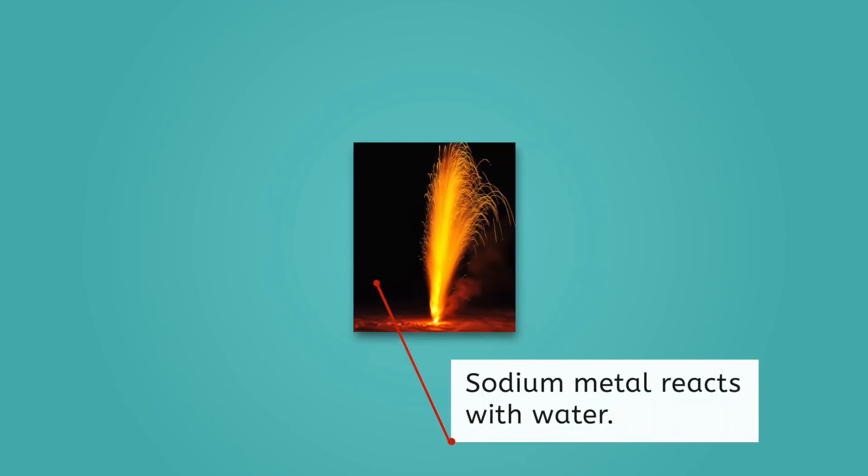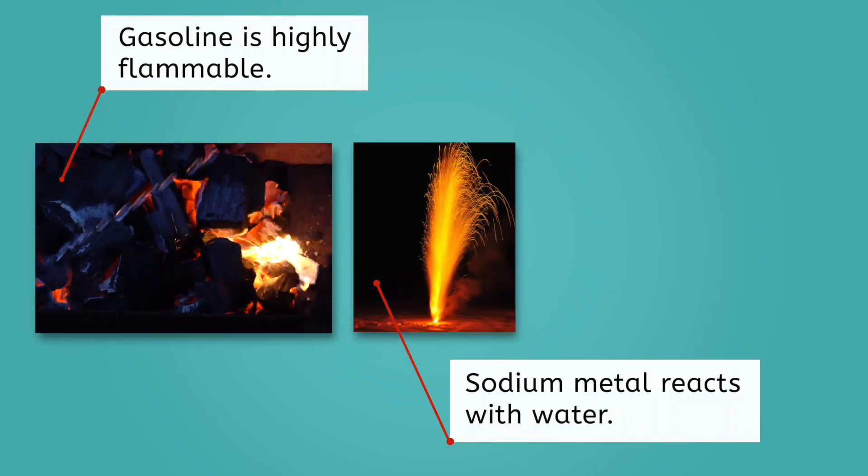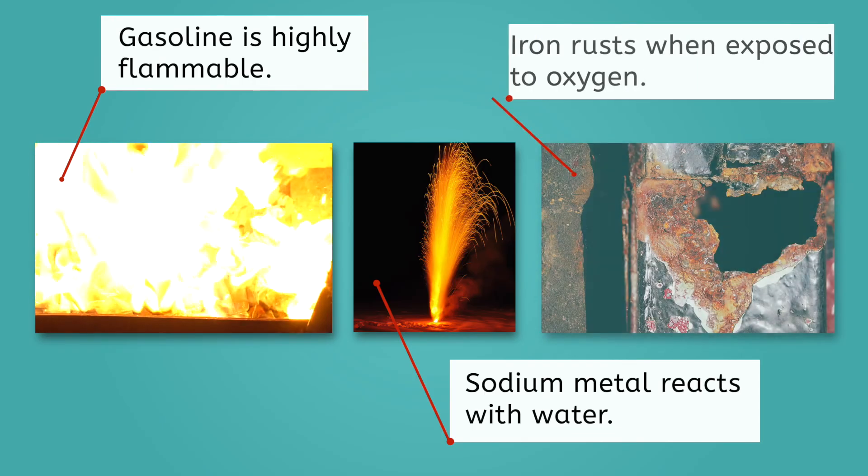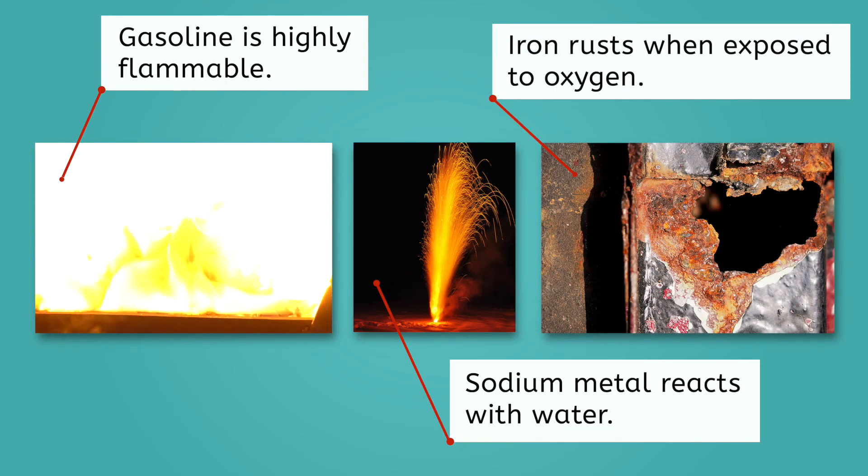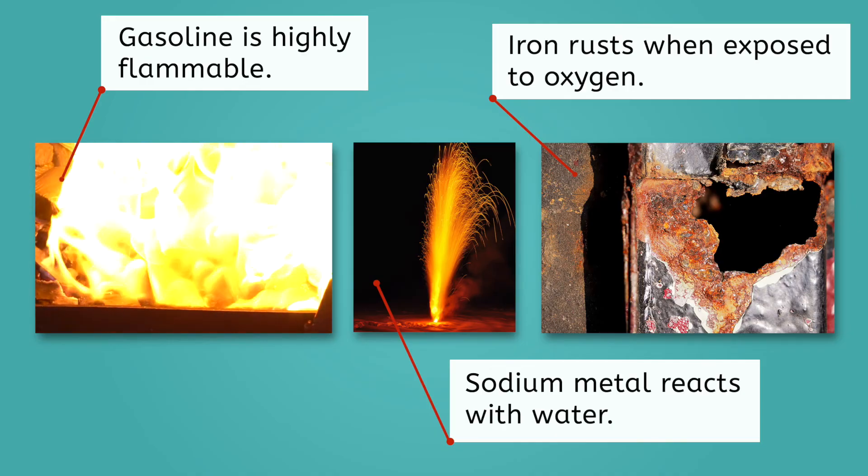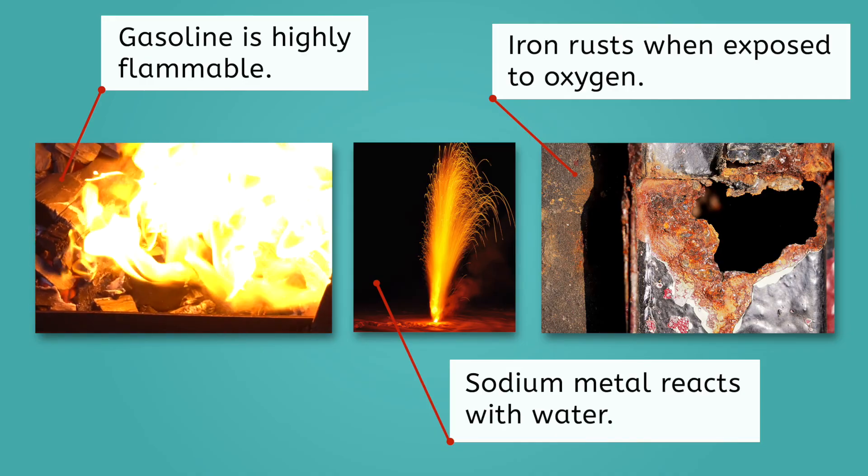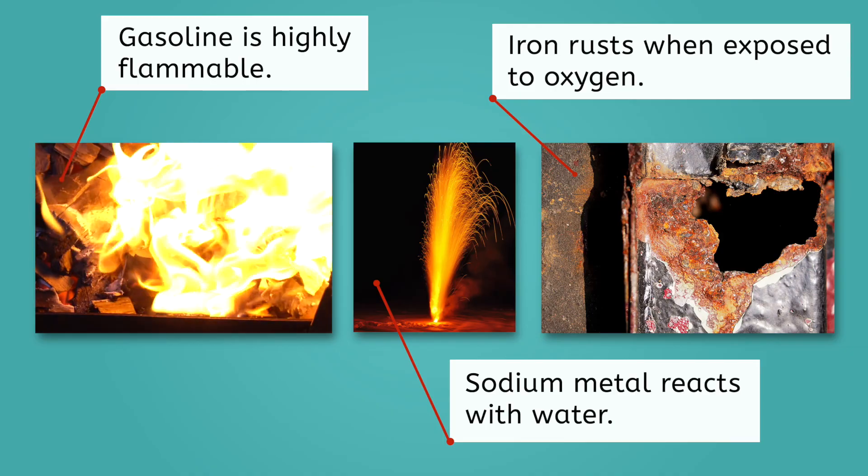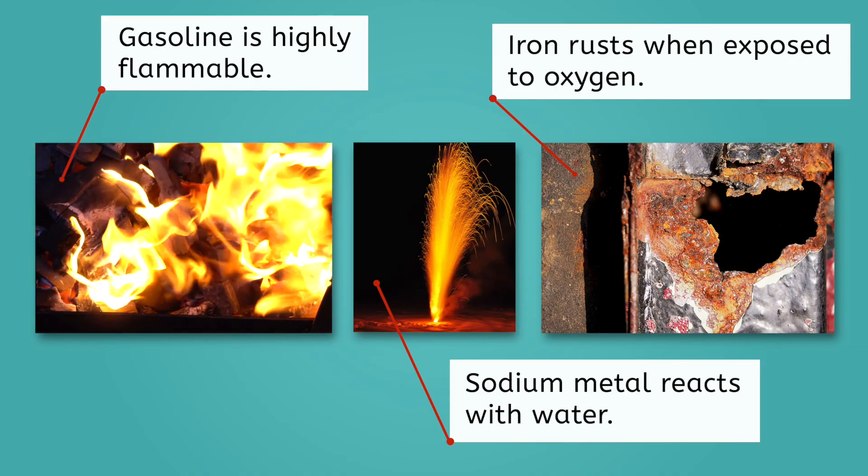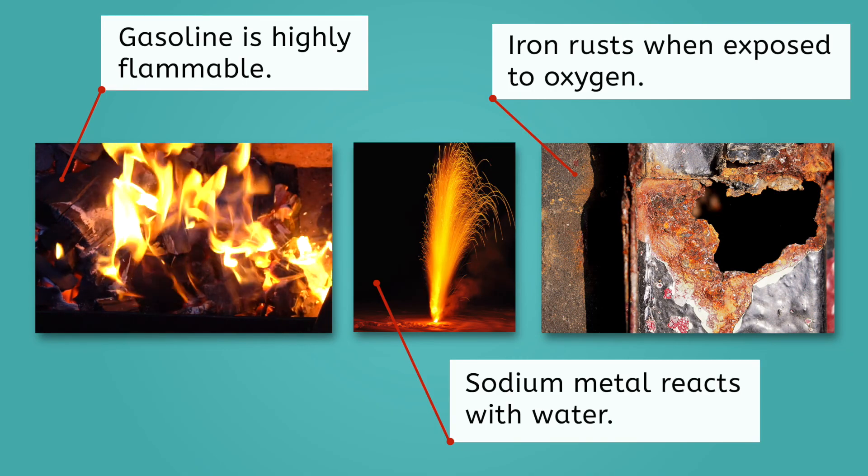Examples of chemical properties include a substance's reactivity with other chemicals such as water and oxygen, its flammability, and its ability to rust. Where physical properties can be divided into intensive and extensive properties, all chemical properties are the same no matter how much of the matter is present. Why do you think that is?